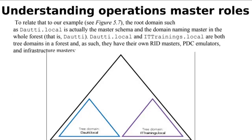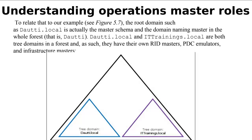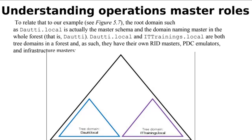So here we have our domain. We have a tree domain Duwati and we have training.local. The tree domain is Duwati, and it is the Schema Master and the Domain Naming Master — the whole forest is Duwati. Duwati.local and training.local are both tree domains in the forest. As such, they each have their own RID Masters, PDC Emulators, and Infrastructure Masters.